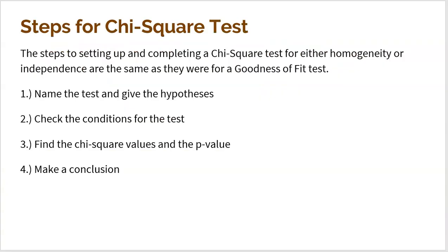These four steps for setting up a chi-squared test are going to be very familiar — we've been using them for quite some time now. Number one: name the test and give the hypotheses. Number two: check the conditions for the test. Number three: find the chi-squared values and the p-value, and then make a conclusion. This is the same four-step basic framework we've been working with any time you run a test for significance.